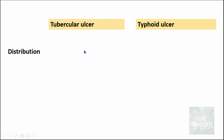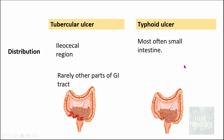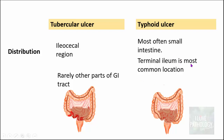Coming to the distribution of ulcers, tubercular ulcers are more commonly located in the ileocecal region. Very rarely, other parts of the gastrointestinal tract can also be involved, such as the colon or the stomach. Whereas typhoid ulcers are most often seen in the small intestine — terminal ileum is the most common location, though they can also be seen in the jejunum or very rarely in the colon.